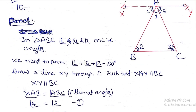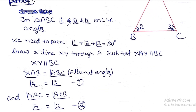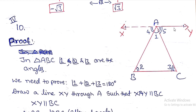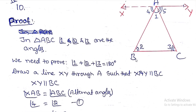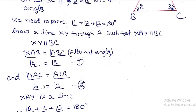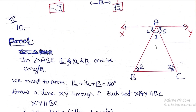Construction: draw line XY through vertex A parallel to BC. Since XY is parallel to BC, angle 4 equals angle 2 — these are alternate interior angles (Z angles). Similarly, angle 5 equals angle 3 — also alternate interior angles. So angle 4 = angle 2 and angle 5 = angle 3.